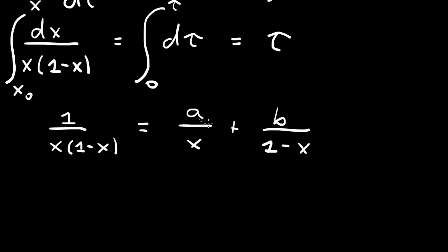We can determine a and b by different methods. The easiest one is the cover-up method. If we multiply both sides by x and set x equal to 0, the b term will go to 0 and this will become a. If we multiply both sides by (1 minus x) and set x equal to 1, the a will go away, and then the b will be 1 over x when x equals 1, which will also be 1.